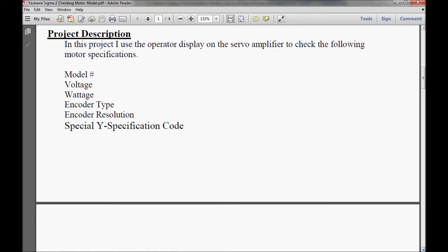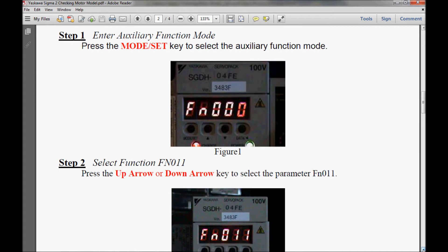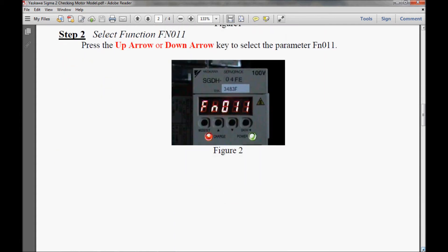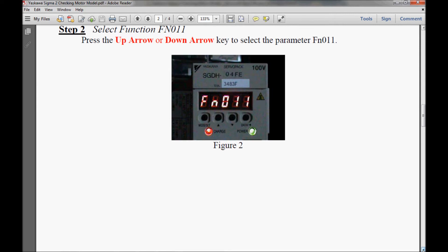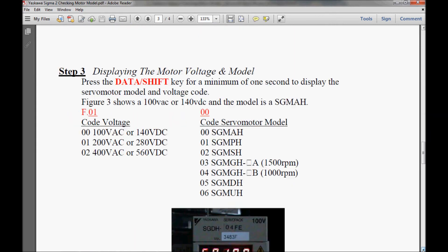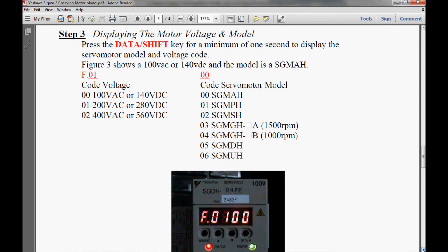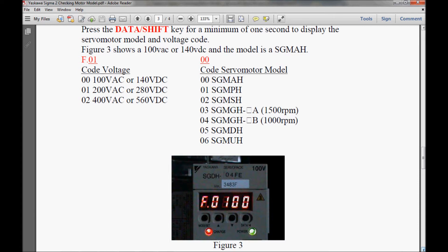Now I'm going to continue scrolling down and go through the step-by-step guide. In step 1, I will be entering the auxiliary function mode. In step 2, I will be entering function 11. And here in step 3, I am displaying the motor voltage and the model. I believe that I have this broken down pretty good for you.